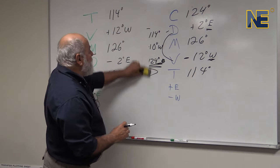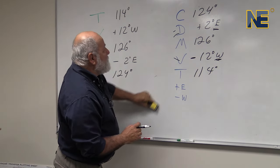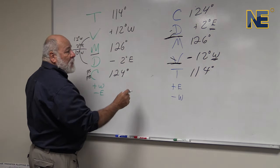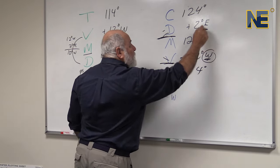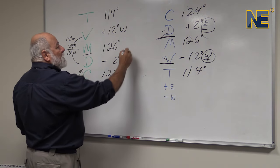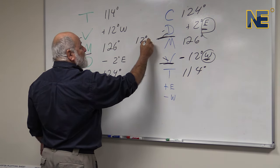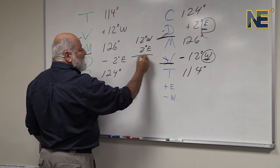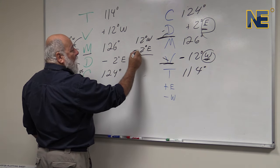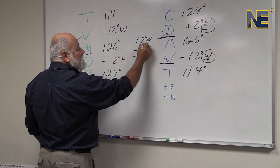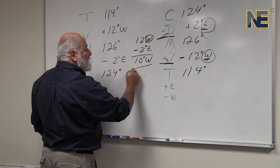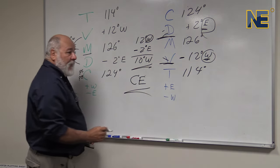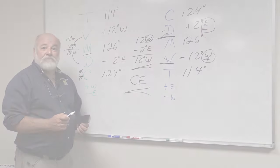All compass error is, is combining the deviation and the variation using whichever direction is greater. 12 degrees westerly, 2 degrees easterly — we subtract because they're unlike directions, we get 10 degrees, and we use the larger direction. Ten degrees west would be our compass error. That's all compass error is and that's all it does.